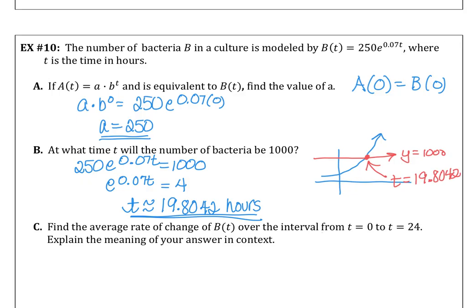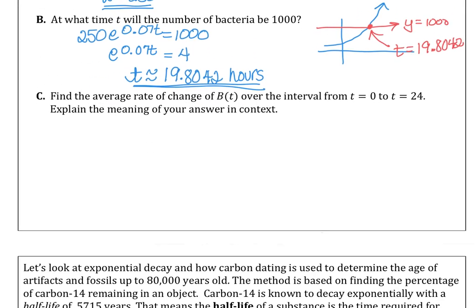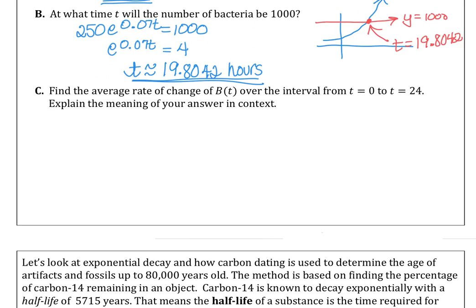And then the last part of that question, find the average rate of change over the interval from 0 to 24 and explain the meaning of your answer in context to the problem. Our average rate of change is going to be the value at 24 minus the value at 0 divided by the change in the time, 24 hours.